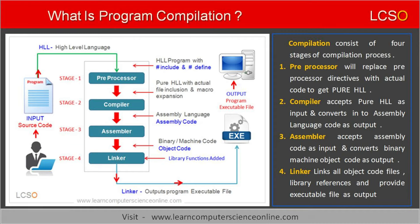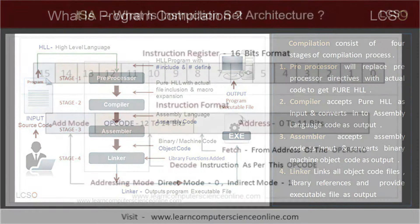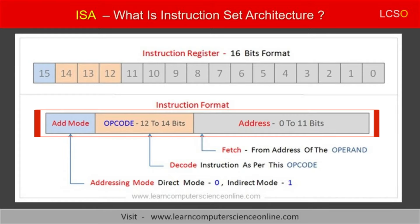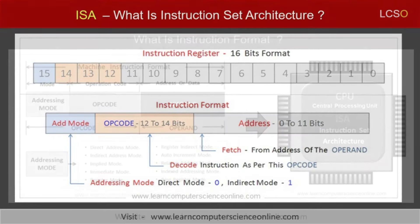The compiler translates the high-level program instructions into the low-level machine instructions in the binary format. The instruction format basically defines the layout of the machine instruction in terms of operation code, operand, and the addressing mode.